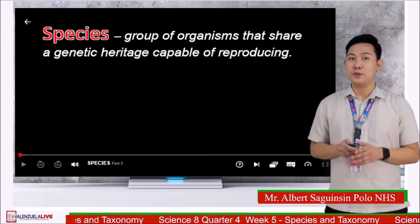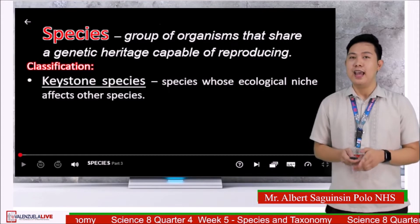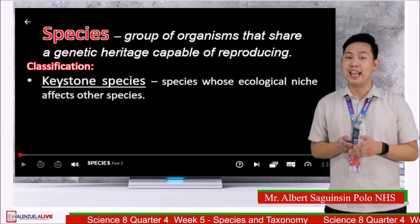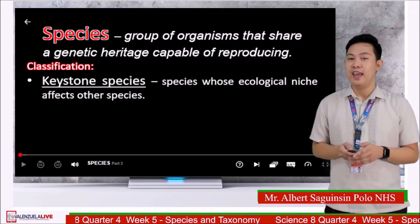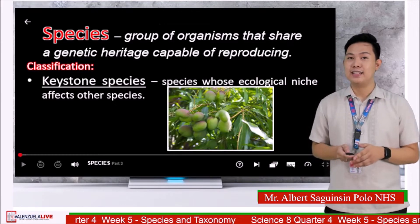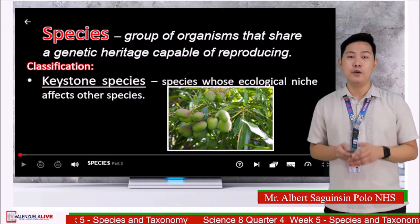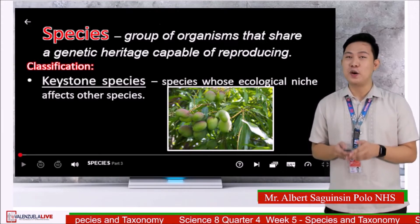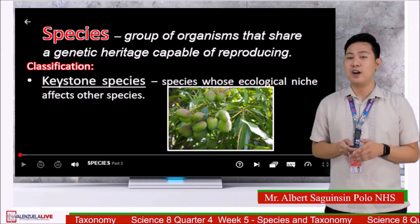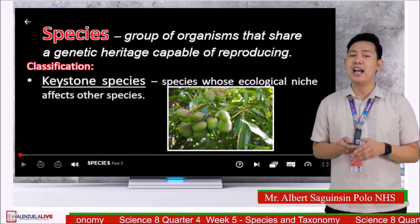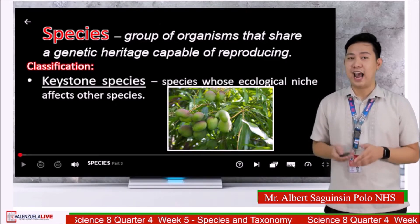Species has two classifications. First is the keystone species — the species whose ecological niche or role greatly affects other species. Examples are plants; as we know, plants are producers that provide food, shelter, and resources to other living organisms. If keystone species are lost, other organisms may begin to thrive and outcompete many other organisms.